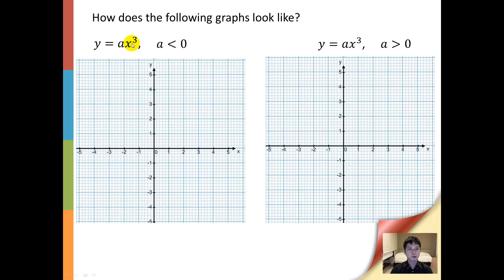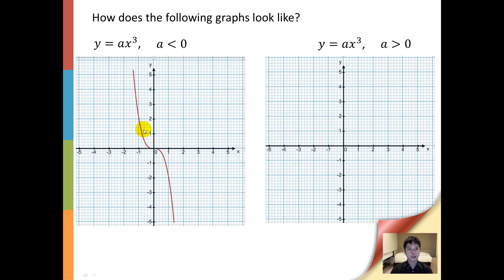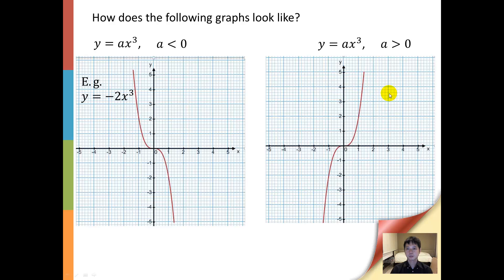Now let us look at how to sketch the graph of a cubic function. When the coefficient of x cubed is negative, it will look like this — for example, y equals negative 2x cubed. And if the coefficient of x cubed is positive, it will look like this — for example, y equals positive 2x cubed.